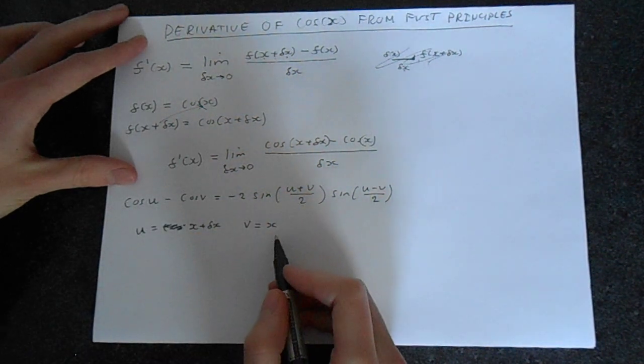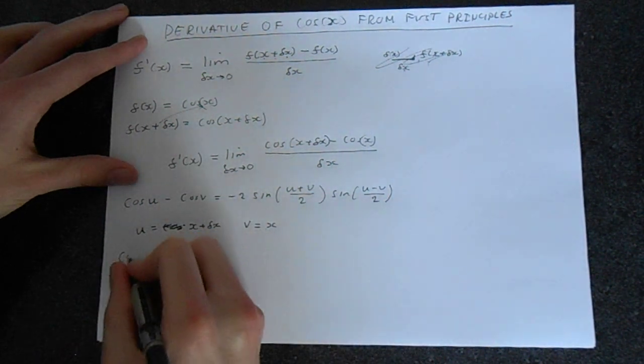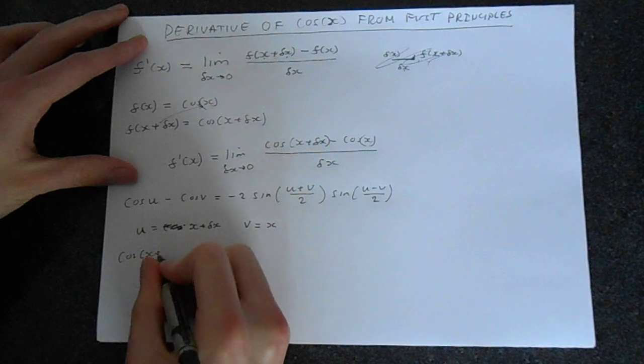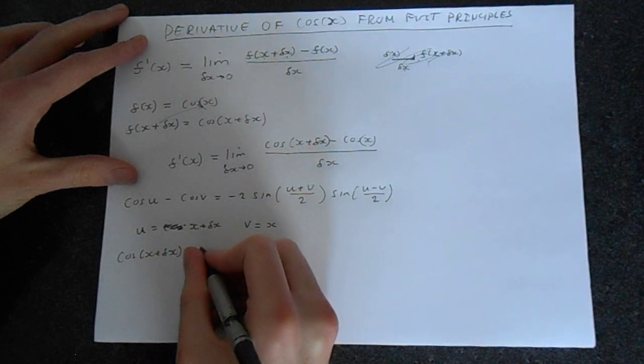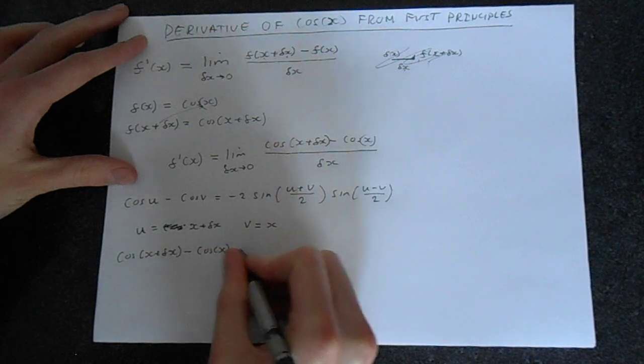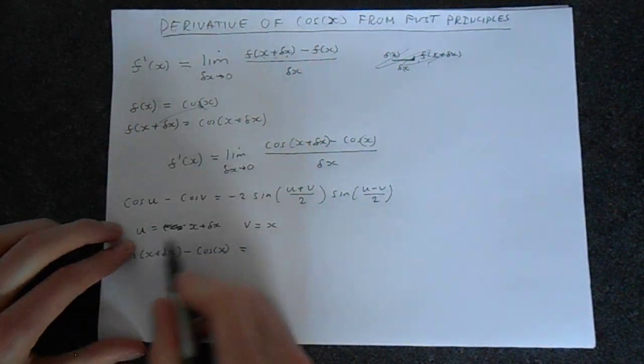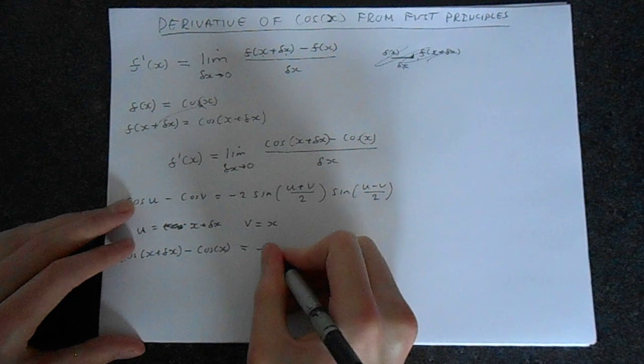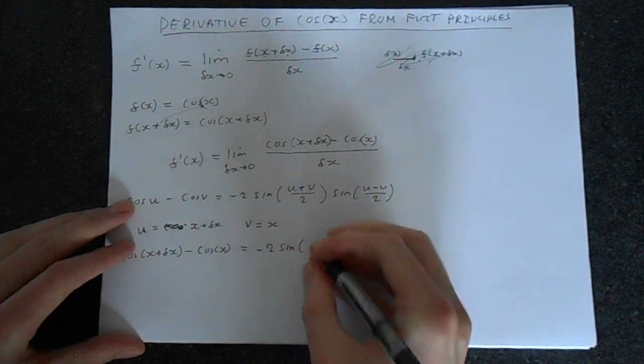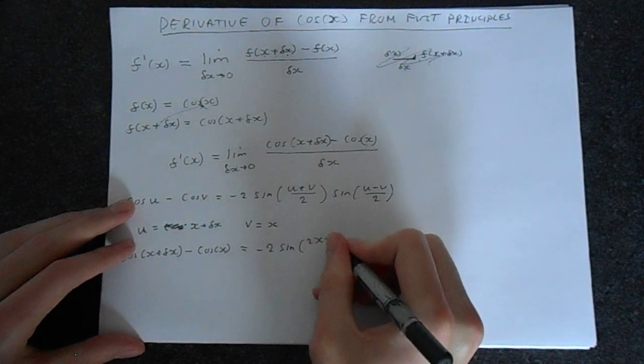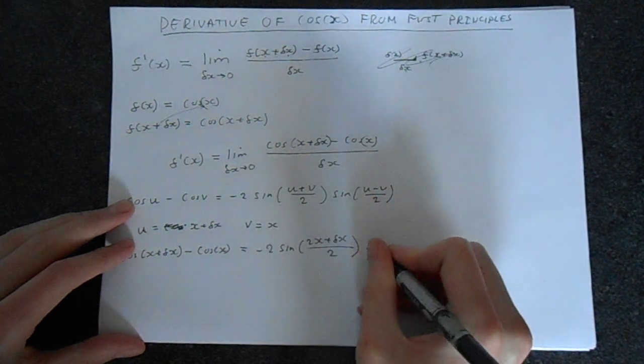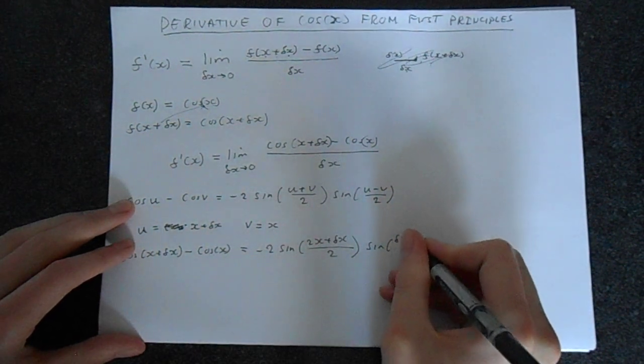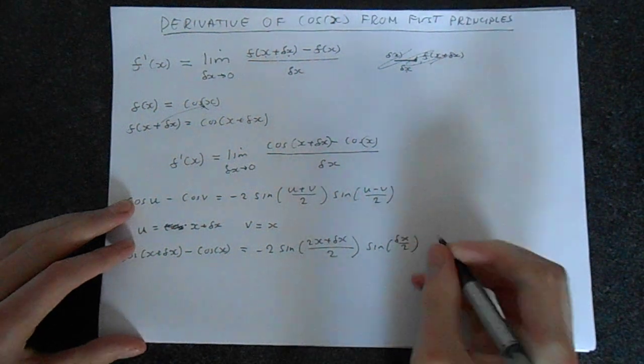OK, so we can make the substitution. So we can say that our cos of x plus delta x minus cos of x is equal to, just substitute this u and v in. So we get minus 2 sine 2x plus delta x divided by 2, sine of delta x divided by 2.